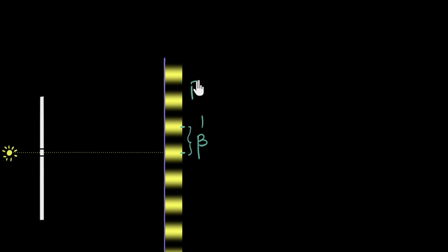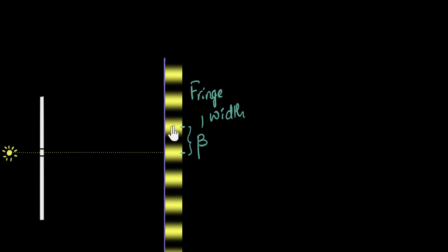So let's begin. This distance is often called beta, and the name is fringe width. The name was confusing for me because I thought we were calculating the width of something, but we are not. What we find is that the brightness is maximum, then it becomes smaller and smaller, then minimum, then increases and becomes maximum, and so on. Fringe width is the distance between two consecutive brightest spots, where the brightness is maximum, or the distance between two consecutive darkest spots, where the brightness is zero. So it's not the width of anything.